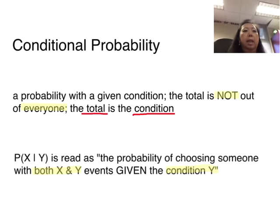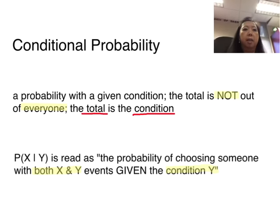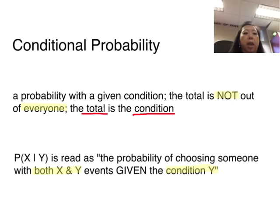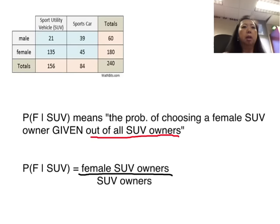Conditional probability is a probability with a given condition. The total is not out of everyone this time — the total is out of the condition that's given. You write a conditional probability with the notation: P, parenthesis, event X, straight bar, event Y. It's read as the probability of choosing someone with both X and Y events — this is an intersection — given the condition Y. The second event is a condition, and the bar is said with the word "given."